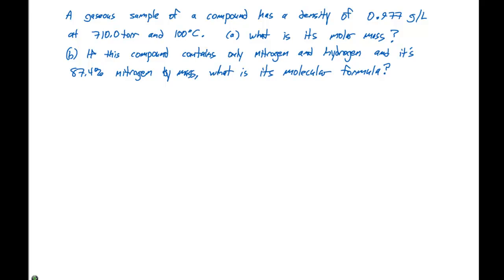A gaseous sample of a compound has a density of 0.977 grams per liter at 710.0 torr and 100 degrees Celsius. The first part of this question asks what is the molar mass. The second part says if this compound contains only nitrogen and hydrogen and it's 87.4% nitrogen by mass, what is its molecular formula?